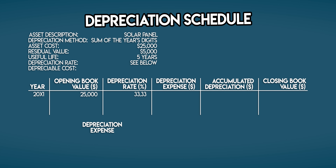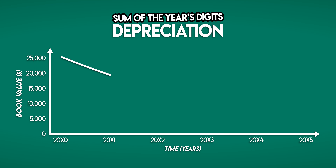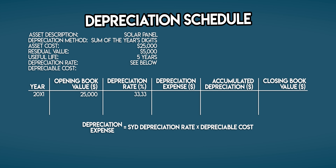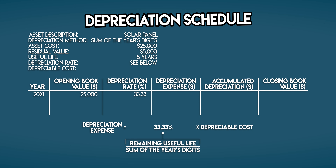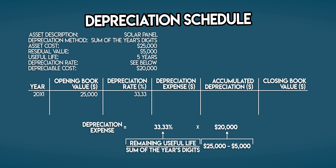Now let's calculate your depreciation expense. This is your SYD depreciation rate multiplied by your depreciable cost. It represents the amount of your solar panel that you'll write off as an expense to your income statement during the year. Keep in mind that the sum of the year's digits method is accelerated — the depreciation expense is higher in early years. Your depreciable cost is the difference between asset cost and residual value: $25,000 minus $5,000 equals $20,000. That's the chunk of book value that will depreciate over its useful life.